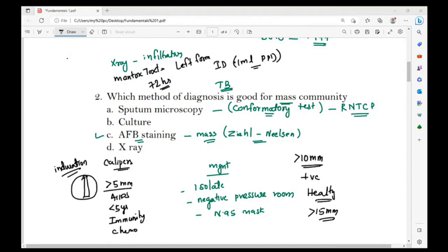For healthy adults, greater than 15 millimeters is positive. For TB contacts and health staff, greater than 5 millimeters is considered positive.